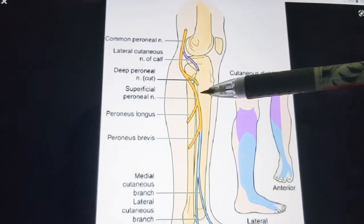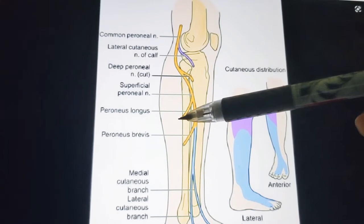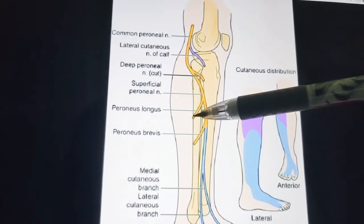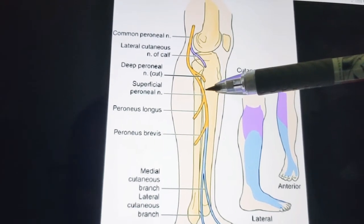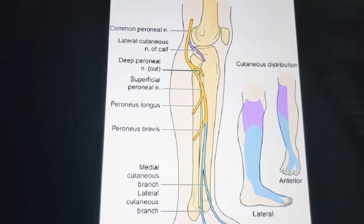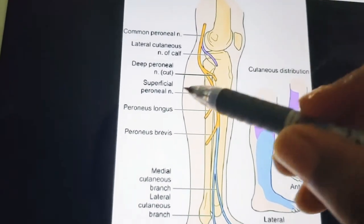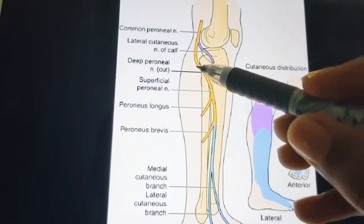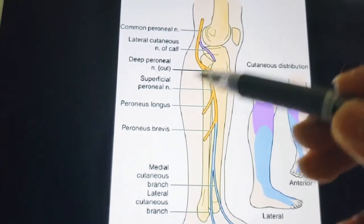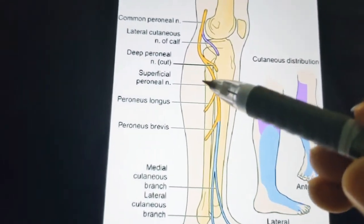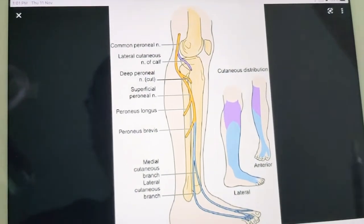The nerve winds around the posterior lateral aspect of the fibula and pierces the peroneus longus muscle. You can see the muscular branch for the peroneus longus muscle. It then passes through peroneus longus and divides into the superficial and deep peroneal nerves. By means of the peroneus longus, it is divided into superficial and deep peroneal nerves.